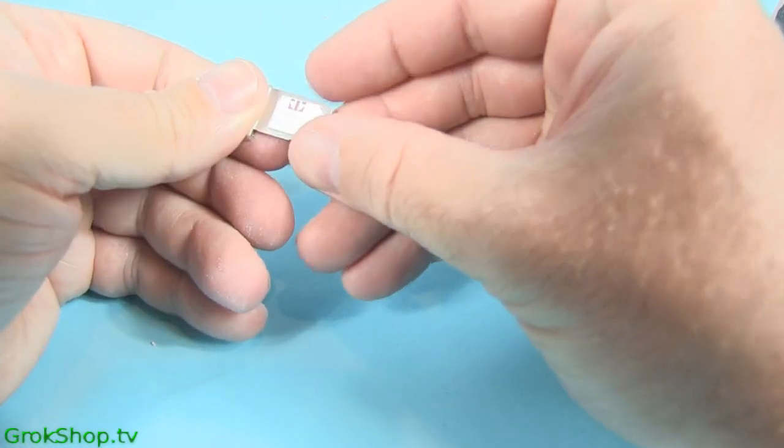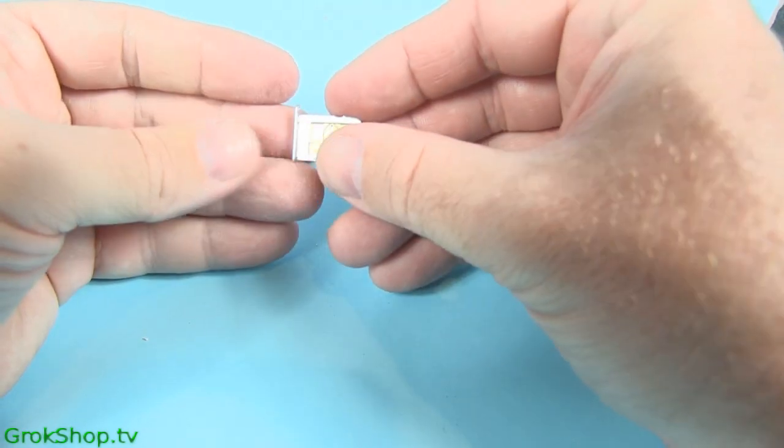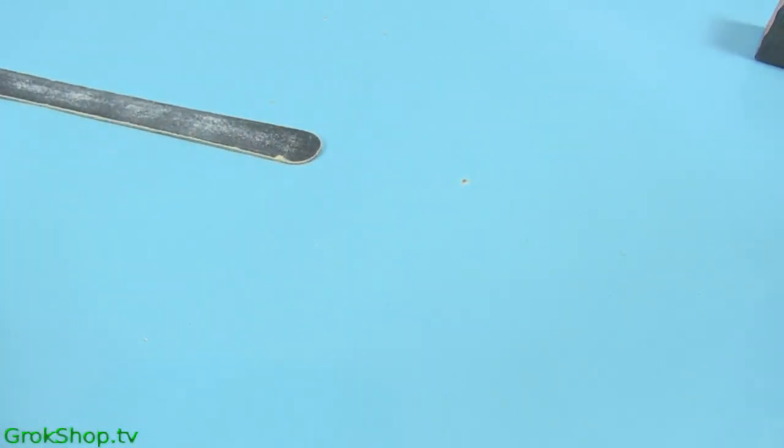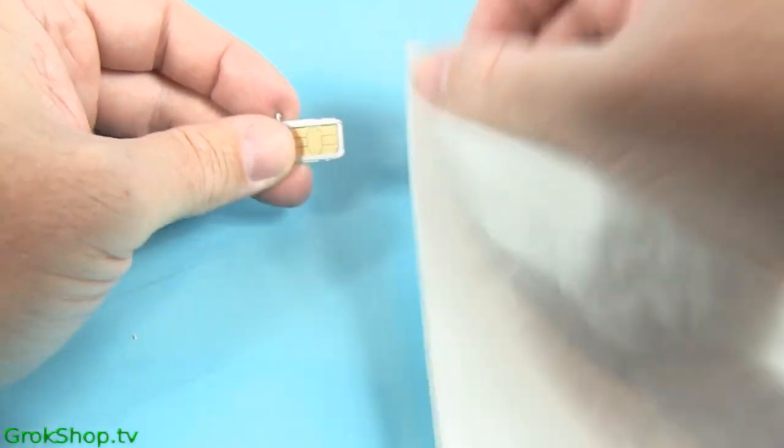Once you get the SIM to where it fits nice and snug in the tray, be sure to clean it off, dust it off a little bit. Last thing you want is getting some SIM dust in your phone.